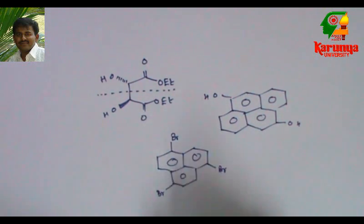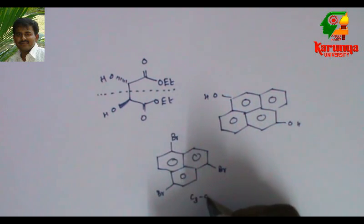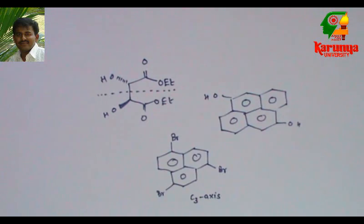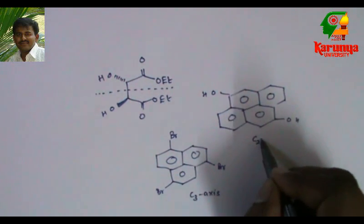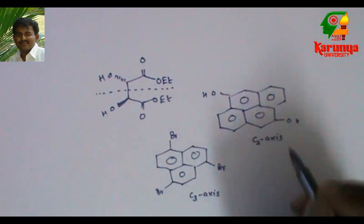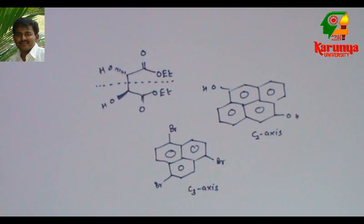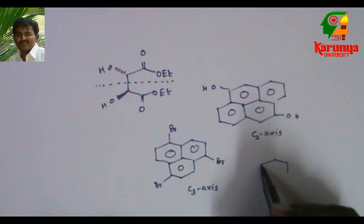Try to predict the number of C13 signals in these compounds also. This is C3 axis of symmetry. This one has C2 axis. Try to find out the number of signals for these compounds. It will be very interesting. I can also go for one more compound like this.